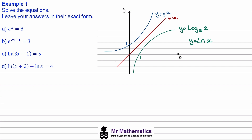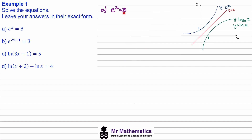Let's start with question A. We've got e to the x equals 8 and we need to work out x. We need to change this x from being a power to being a multiple, and the way we do this is we apply the opposite function of e to the x, which is the natural log of x. So if we apply the natural log of both sides, we can bring this x down in front of the natural log using the power rule. So now we've got x times the natural log of e equals the log of 8.